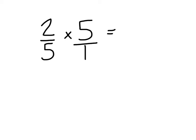When we multiply fractions, we multiply straight across. So in this case, 2 times 5 - if you said 10, awesome - and 5 times 1 is 5. And 10/5 is 2, which was our answer.